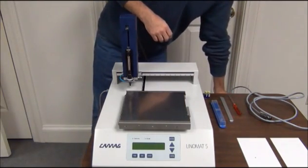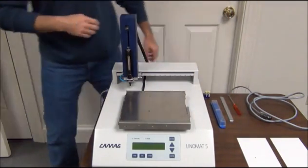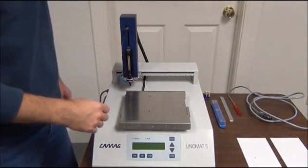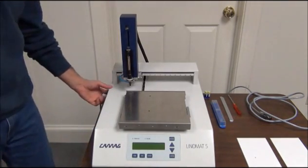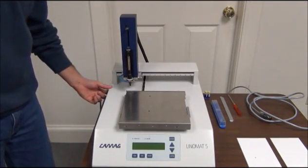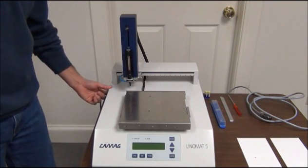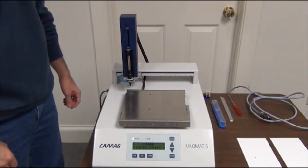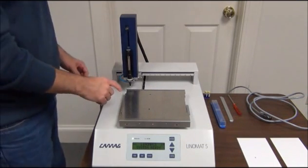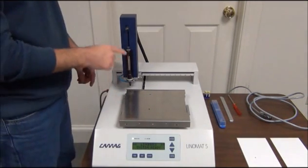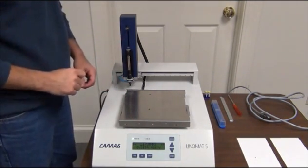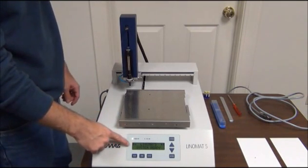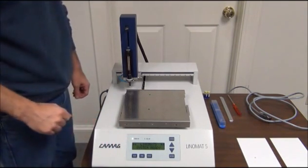Then we'll turn the gas on. The pressure needs to be anywhere from at least above 58 PSI. I usually set it to around 70 PSI. Now we'll turn on the instrument. And when we do, the instrument will initialize. So the stage drive initializes first. And then the syringe drive will initialize. And once that's done, you'll see the front says system ready, meaning the Lenomat is ready to go.